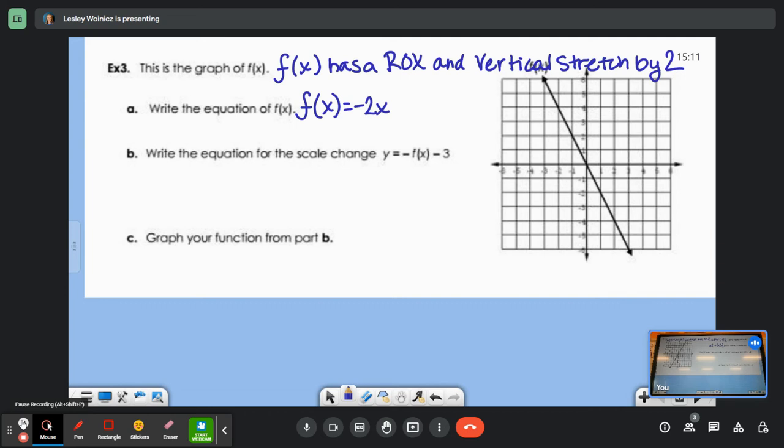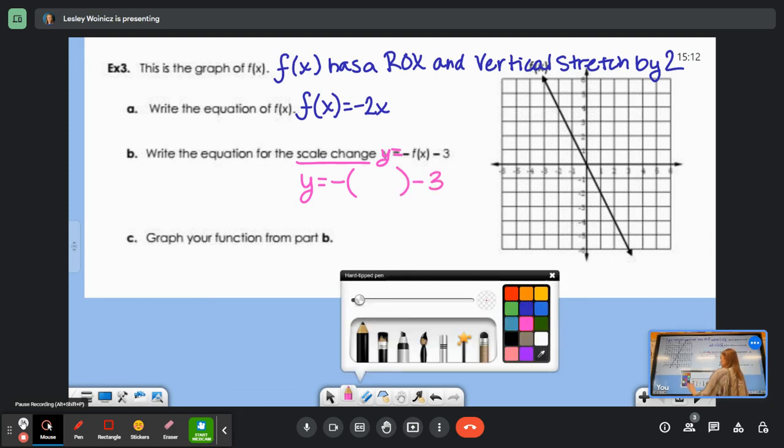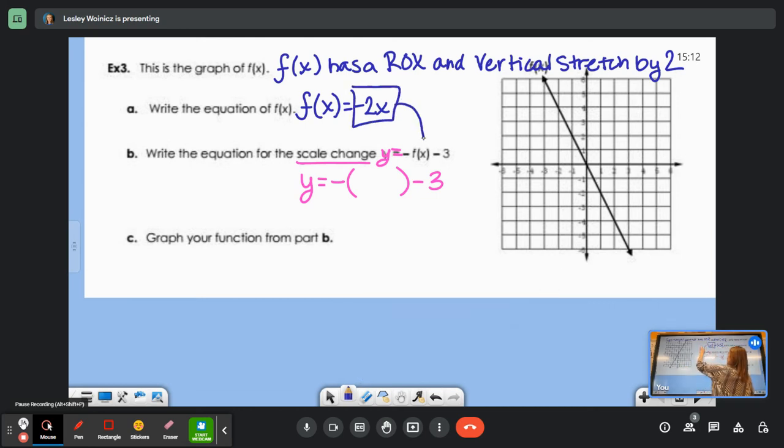What about our y-intercept or b-value? Zero again. That part was easy. So we're going to apply the scale change which is our y equals rule. So y equals the opposite of whatever our f(x) is and then subtract 3. So we have to plug in our negative 2x wherever we see f(x). So negative 2x goes right in there. What happens when we do a reflection of something that's already been reflected? Yeah, it goes back to a positive slope. So we get y equals positive 2x with a minus 3. So our b-value is negative 3. That tells us where to put the y-intercept. Zero negative 3. And our slope is 2.